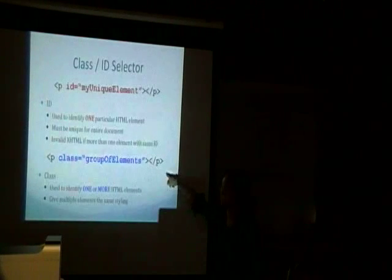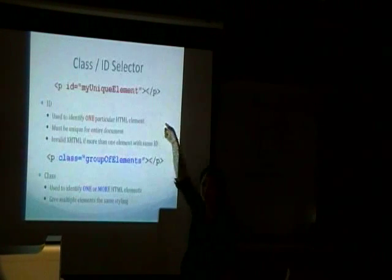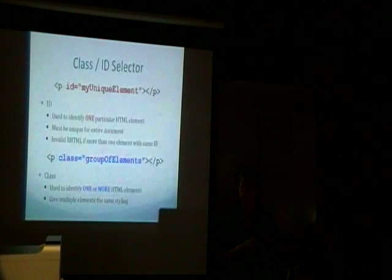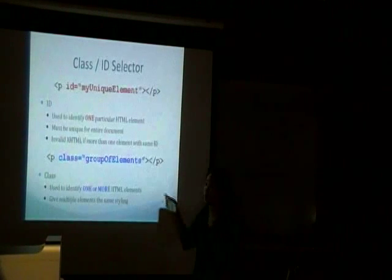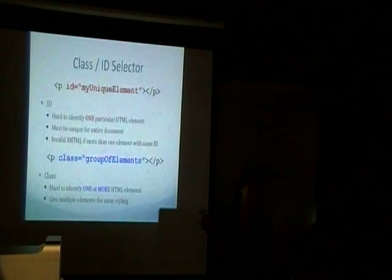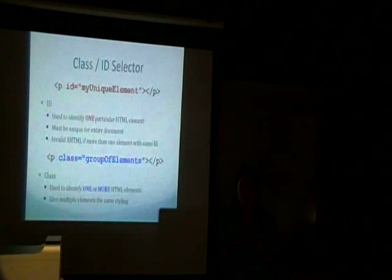Alternatively, if you want to identify one or more HTML elements, you can use a class. A class is used to give multiple elements the same style. So you use an ID when you want to target one specific element, and you use a class if you have a bunch of elements — for example, menu items — that you want to share the same style.